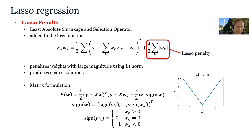We can also write the LASSO regression loss in matrix formulation. The LASSO penalty can be written as w-transposed times vector sign(w), where vector sign(w) is filled with ones, minus ones, and zeros depending on the signs of the individual weights. This way we can represent the vector of absolute values of the weights.